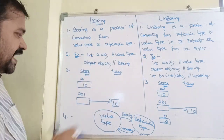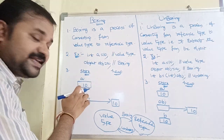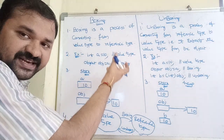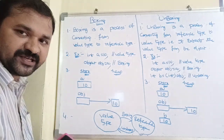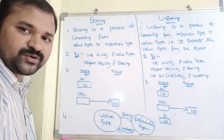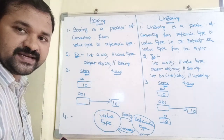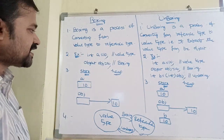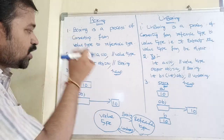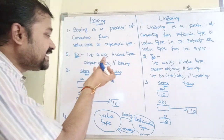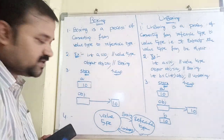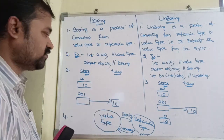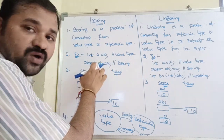In the block diagram, a contains 10. Value types are stored in stack memory, whereas reference types are stored in heap memory. So 10 is stored in the stack initially. When we write object ob = a, the value 10 is then available in heap memory because it has been converted to a reference type.